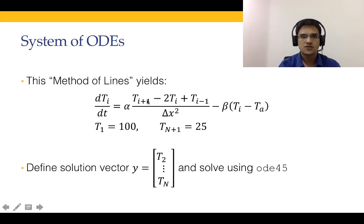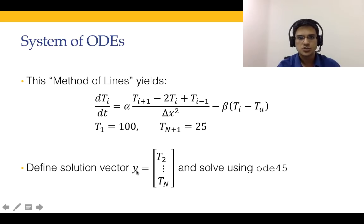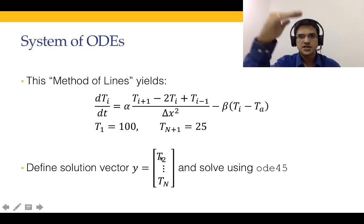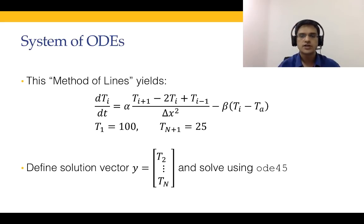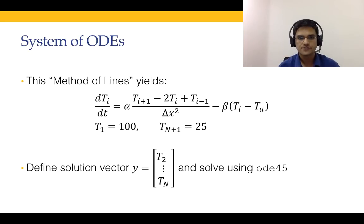After substitution, the Method of Lines yields dT/dt equal to the discretized equation for all center points, with T1 equal to 100 and T(n+1) equal to 25 at the two endpoints. What is changing with time is Ti for T2 to Tn. So we define the solution vector y as T2, T3, T4, and so on up to Tn. We do not need to solve for T1 or T(n+1) because those values are already known.